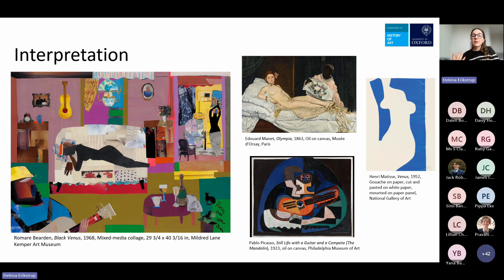At a moment where blackness was really being reclaimed and the rights of blackness were completely at the forefront — politically, socially, culturally — on all levels in American society, Romare Bearden was really participating in that through his art. This is really interesting and not something you can immediately read from the collage — this is where we draw on other sources and think about what time does this exist in.